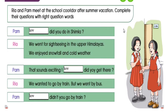What did you do in Shimla? Not 'how' — write 'what,' W-H-A-T. What did you do in Shimla? We went for sightseeing in the upper hills. We enjoyed snowfall and cold weather. Rhea says we went for sightseeing in the upper Himalayas and enjoyed snowfall and cold weather. That sounds exciting. How did you get there? We wanted to go by train but we went by bus.